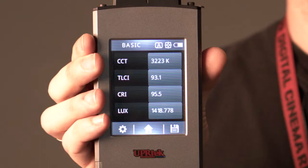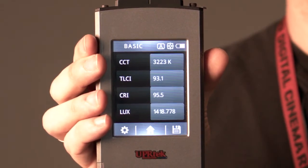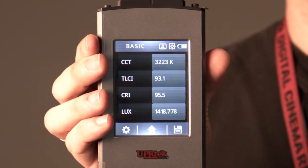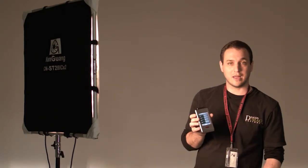And there we go. So now we've got 3200 which is tungsten, TLCI of 93.1, CRI of 95.5, and a LUX of 1418, which is very good for a light source of this calibre.